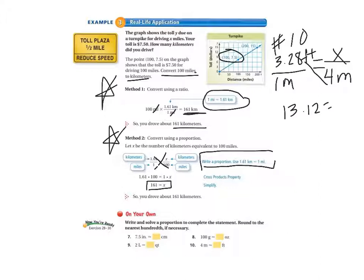And that is equal to X or 1X. So now we know that X equals 13.12 feet.